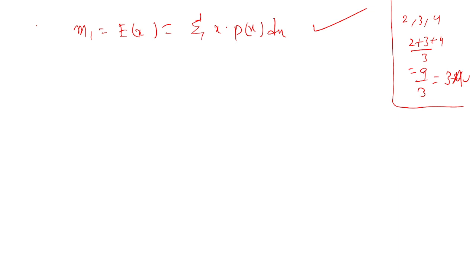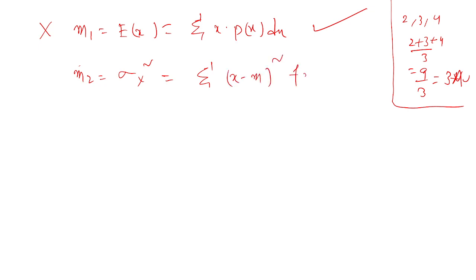If the first mean is not sufficient for analyzing the data for a company, they go for the second mean, which is denoted as variance — m₂ or variance. That is defined as the sum of (x minus m) whole square into p(x) dx. This is the second averaging process.